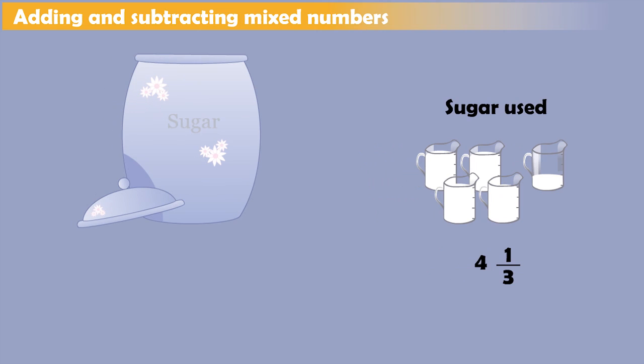What about the sugar left in the sugar pot? Suppose there was 8 and 2 3rds cups of sugar in the pot before Sarah and Lily used 4 and 1 3rds cup of sugar for their cupcakes. To find out how much sugar is left in the pot, we need to subtract 4 and 1 3rd from 8 and 2 3rds.